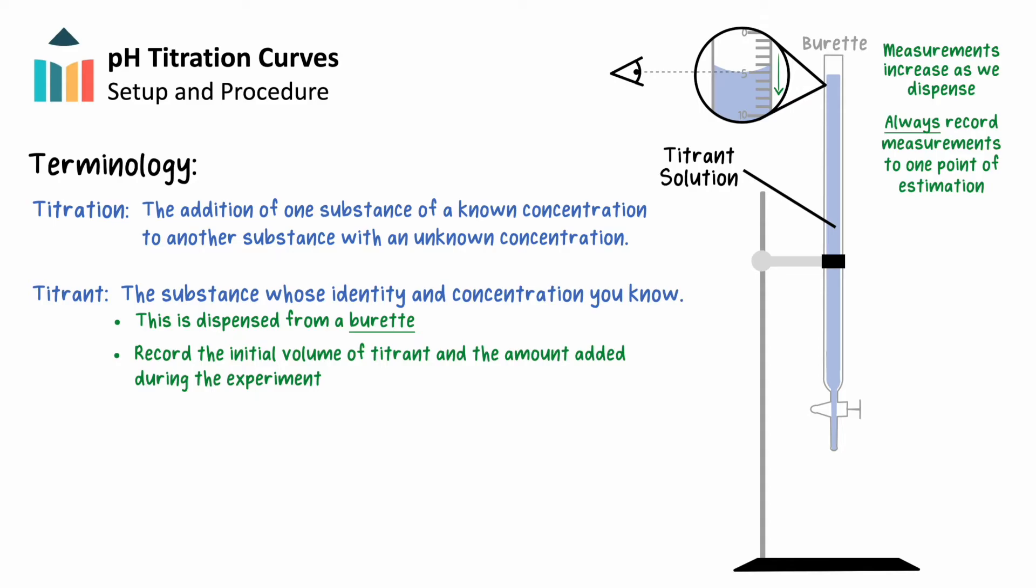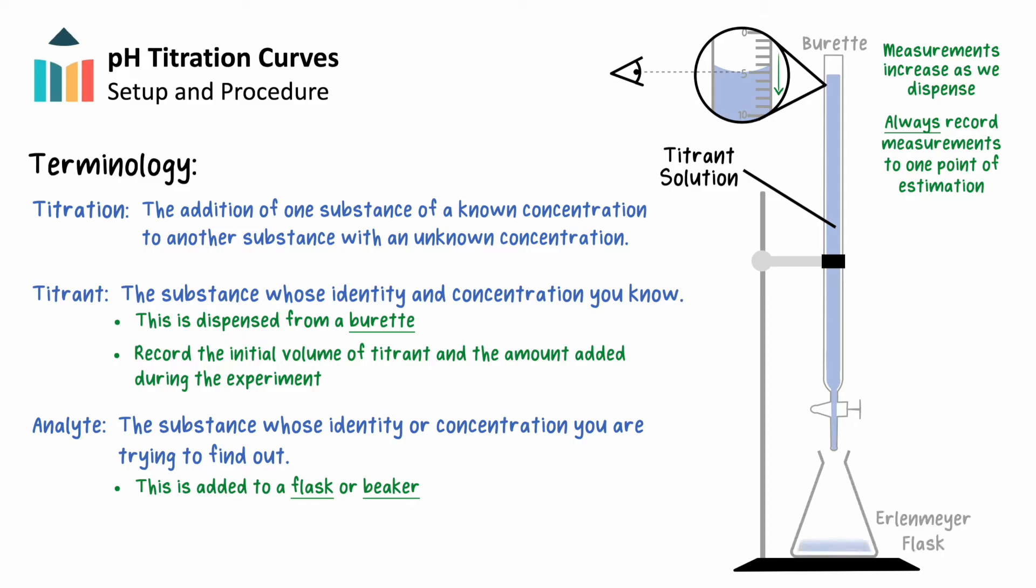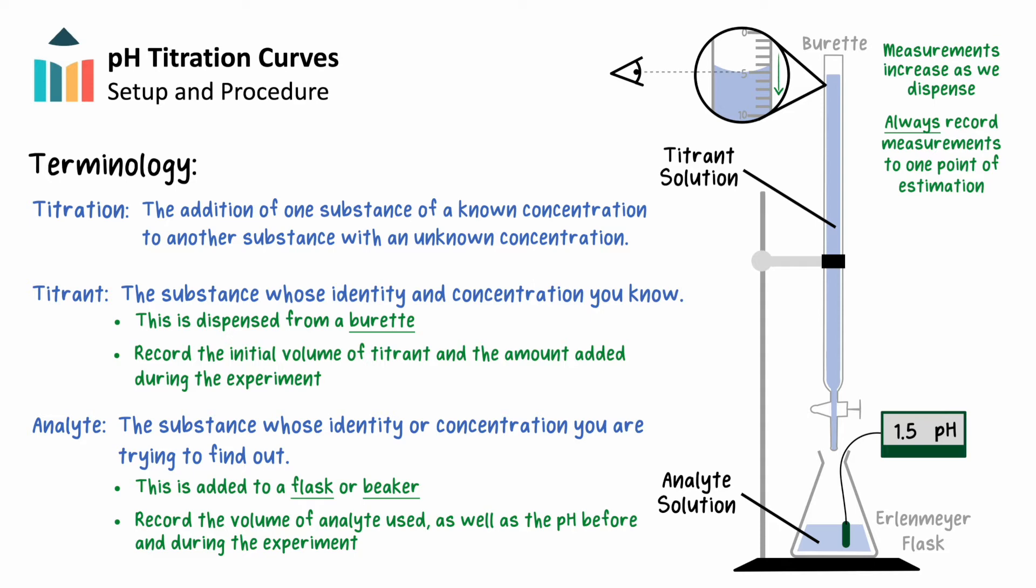Our next term is analyte, which is the substance whose identity or concentration we're trying to know more about. We add our analyte to a beaker or an Erlenmeyer flask, which we place beneath the burette. We'll measure the volume of analyte that we've added to our flask, and if we're conducting a pH titration, record its pH before and during the experiment.